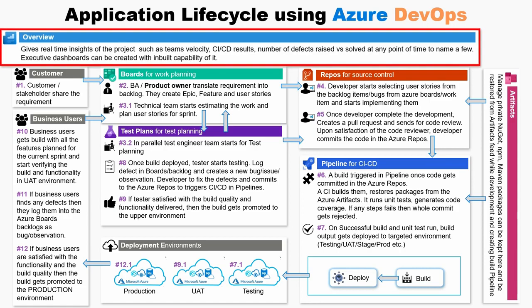During the entire process, customers and stakeholders can get real-time insights into the project such as team velocity, CI/CD results, dependencies, and defects raised versus solved, by creating an executive overview dashboard, which is a built-in capability in Azure DevOps.